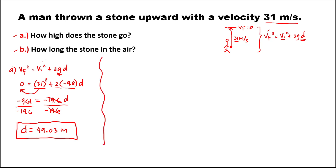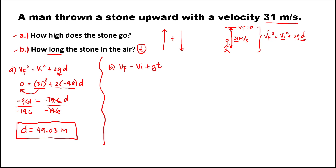For part B — how long is the stone in the air — we are looking for the time. The total flight time equals time up plus time down. We can solve for time up using the formula: final velocity equals initial velocity plus gravity times time.